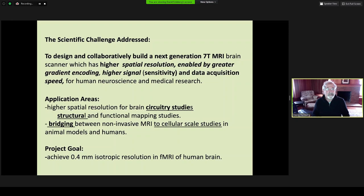The immediate application areas are circuitry studies in the cortex and structural and functional imaging, as well as bridging non-invasive MRI human imaging to cellular scale studies in animal models. The project goal was to achieve 0.4 millimeter isotropic resolution in fMRI.